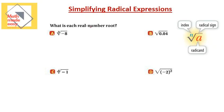It says here: what is each real number root? We are looking only for real roots; there are other imaginary roots not being asked for here. The first question asks for the cubic root of negative eight. The number you multiply by itself three times to get negative eight is negative two. Negative two times negative two times negative two gives negative eight, so the answer is negative two.